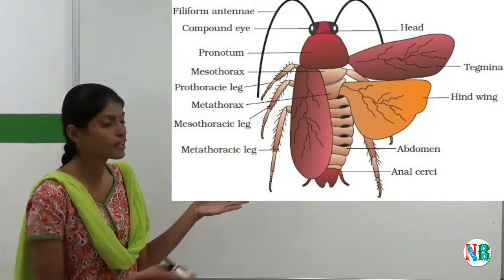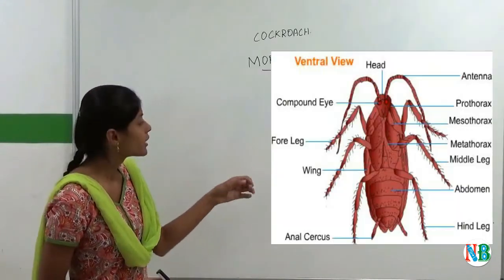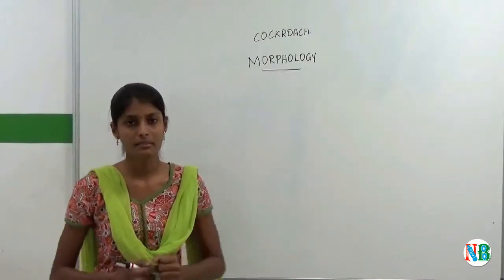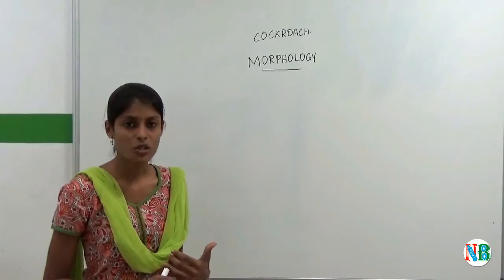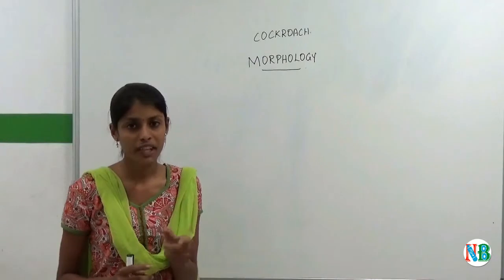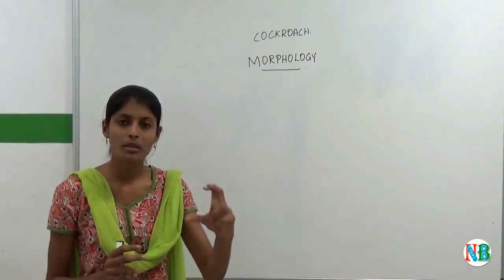If the sclerites present on the dorsal surface means they are called tergites. And if it presents on the ventral surface means they are called sternites. And these sclerites are joined by a membrane called arthrodial membrane. And this membrane will be thin and flexible. So thereby their movement can be easily done. And the thorax will be stiff.